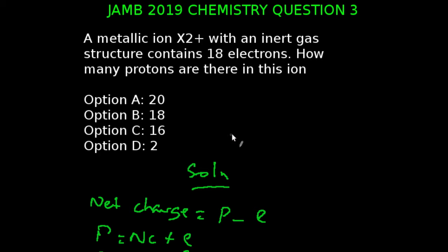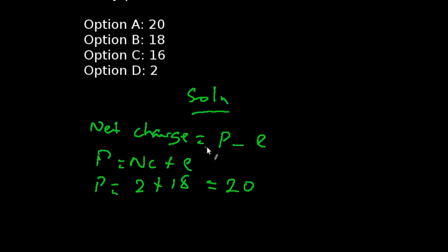Let us look at how we got that. So we have our net charge to be proton minus electron. Our proton, made the subject of the formula, becomes net charge plus electron. Our net charge is 2+ and our number of electrons is 18, and that will give us 20.